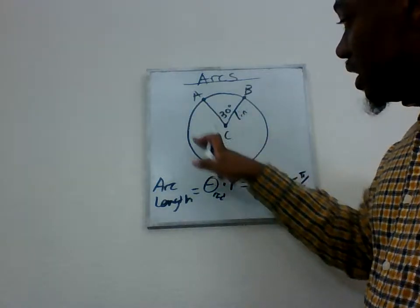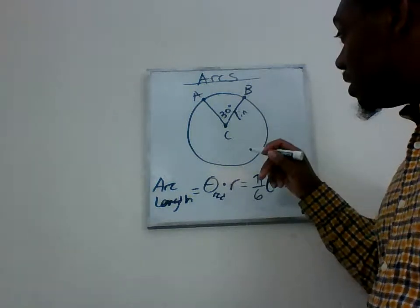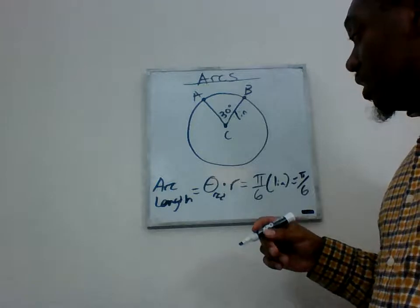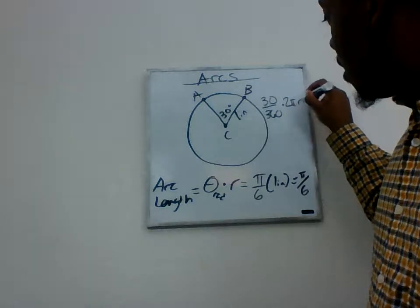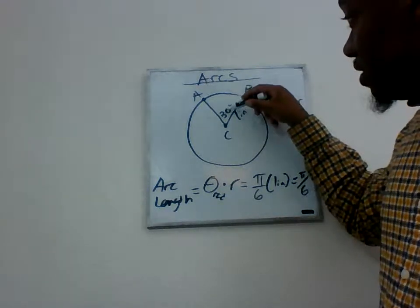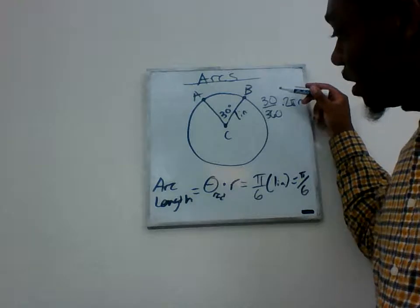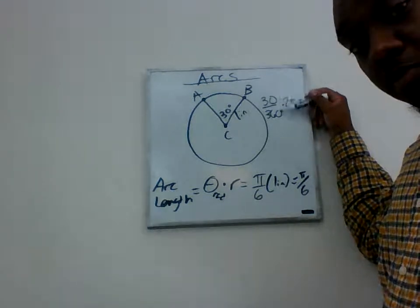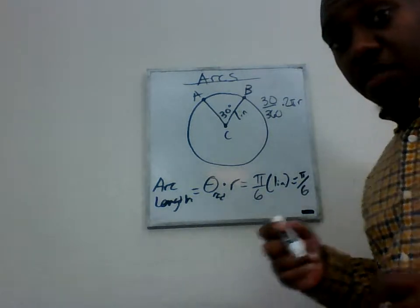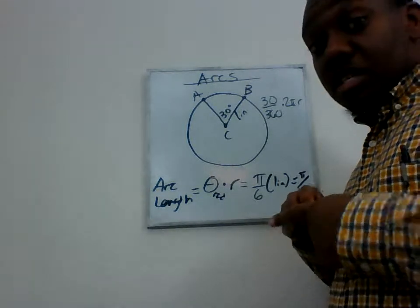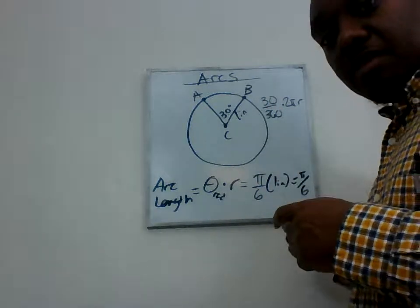If I didn't know that 30 degrees is π/6, I can use the proportion method instead. The whole circle is 360 degrees and the whole distance around is 2π times the radius. So what's 30 out of 360 times 2πr? I'm looking at 30 degrees out of all 360 degrees, taking that fraction of the entire circumference. This gives the same result: π/6.